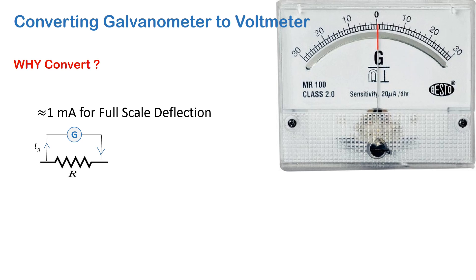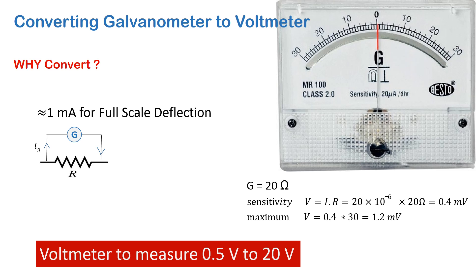So if you have to use it as a voltmeter, we will try and understand what is the maximum voltage that this galvanometer can measure. Suppose the internal resistance of this galvanometer is 20 ohms, so its sensitivity will be 20 microamperes into 20 ohms, which is 0.4 millivolt.